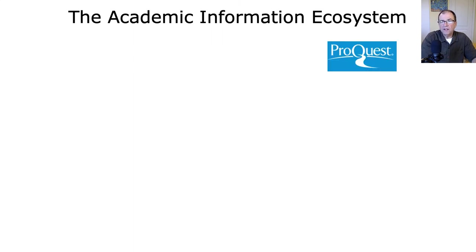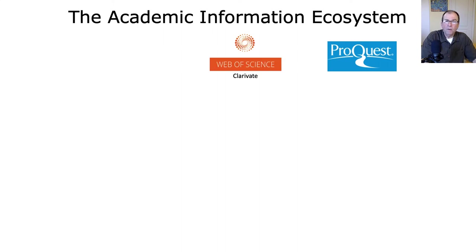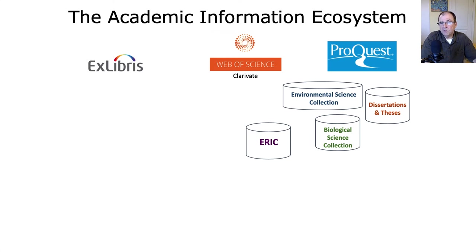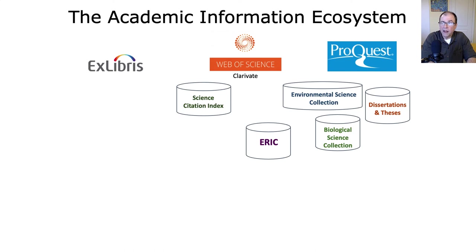ProQuest is one very large information company that provides access to a number of different databases. We also have Web of Science, which is owned by Clarivate — you're probably familiar with Web of Science but not necessarily the company that owns it. Web of Science is a platform that provides access to a number of different databases as well. And there's also Ex Libris. All three are very large private information companies. Web of Science is famous for the Science Citation Index, but also includes the Arts and Humanities Citation Index and Social Science Citation Index.